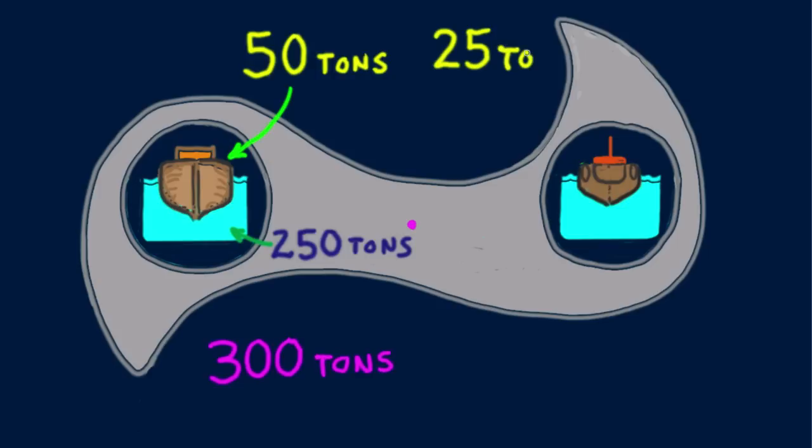The right gondola carries a 25-ton boat. After displacing 25 tons of water, 275 tons of water remain. Total 300 tons. So each gondola weighs 300 tons, whatever the weight of the boats they carry, in accord with Archimedes' principle.